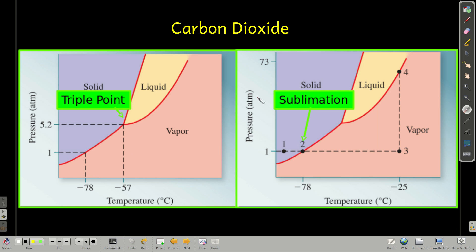For instance, these phase diagrams are for carbon dioxide. Temperature minus 78 here, minus 57 here, pressure is 1 atmosphere, 5.2 atmospheres here.